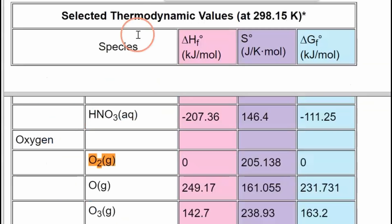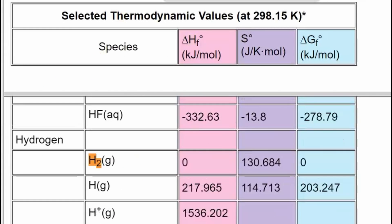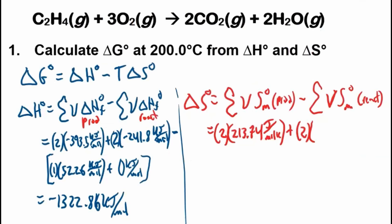So 2 times the molar entropy of CO₂. We'll look it up, so CO₂ gas is 213.74. Now the units are different, we've got to make sure we have the right units. Joules per mole Kelvin, but you'd want to look on the table to make sure that's what it is.